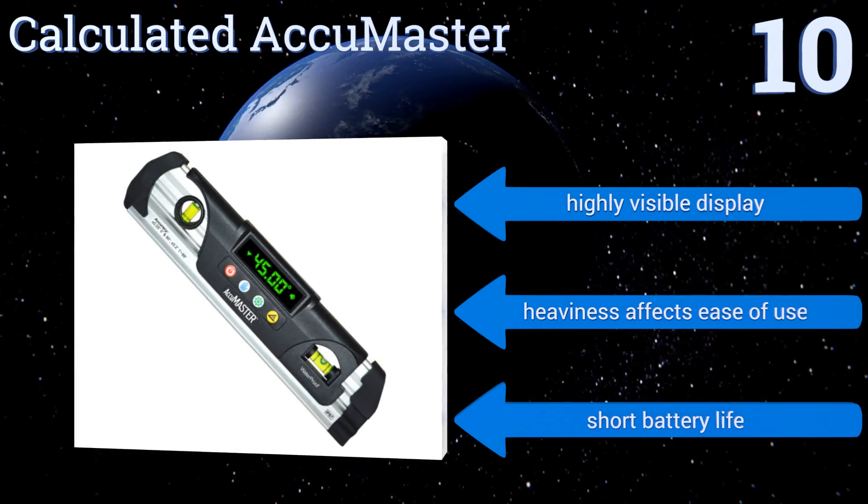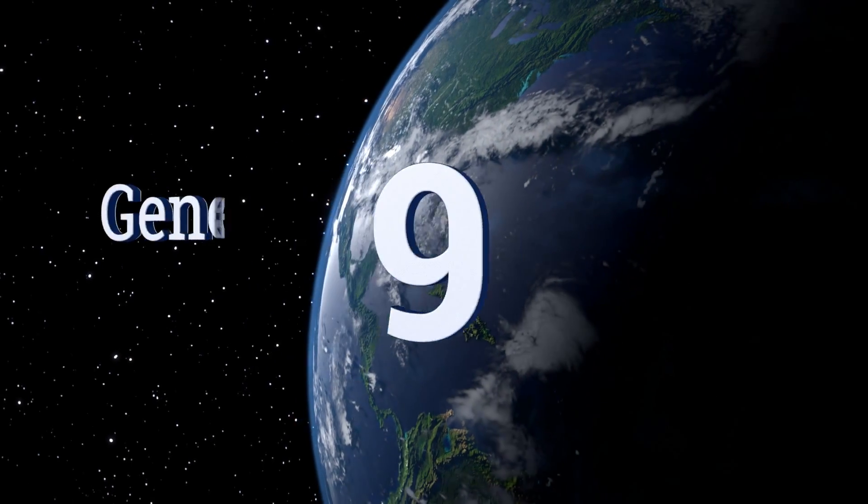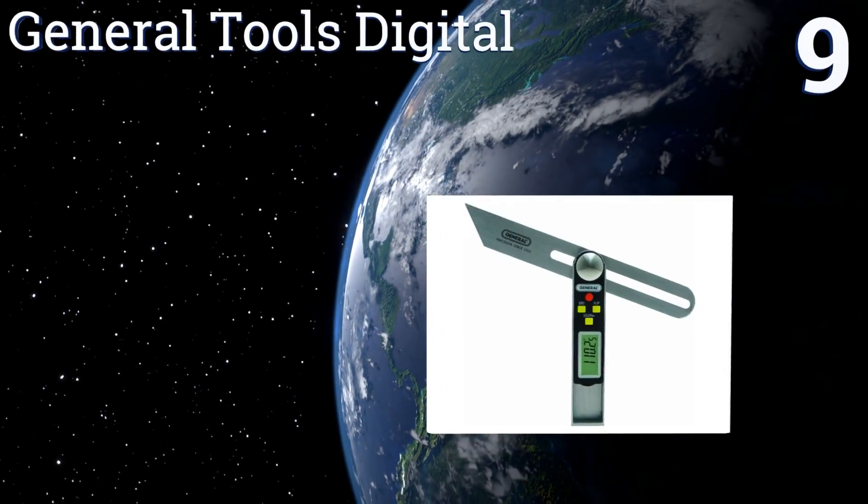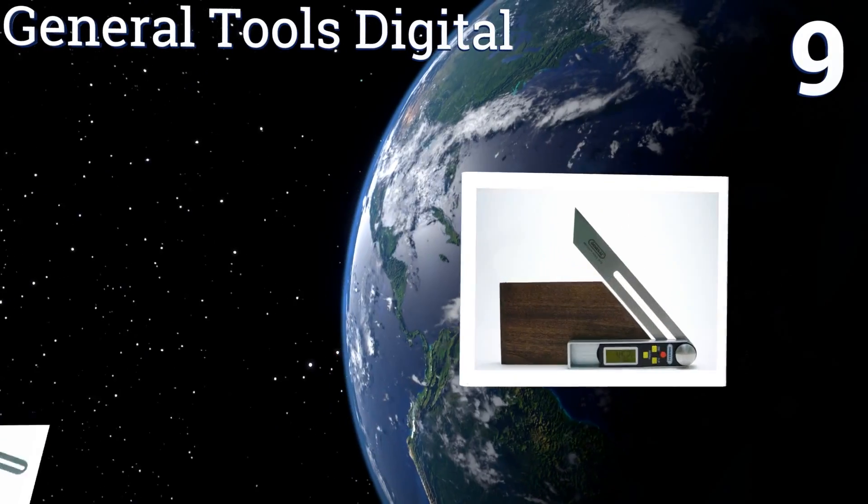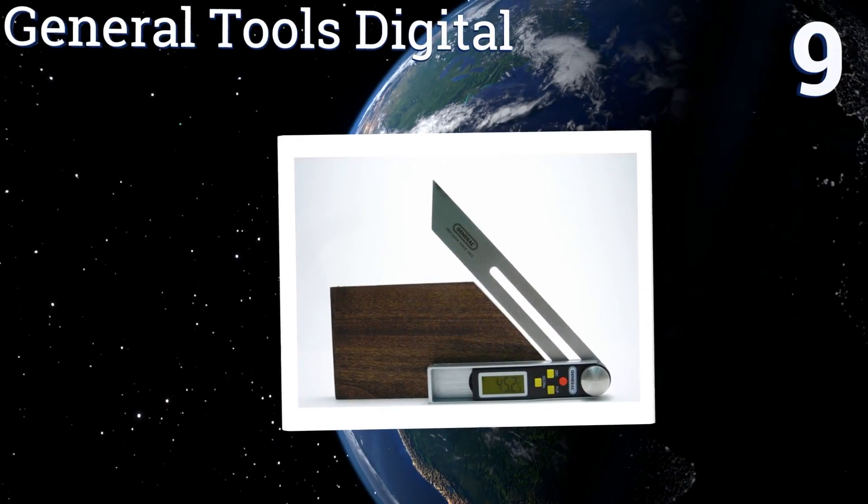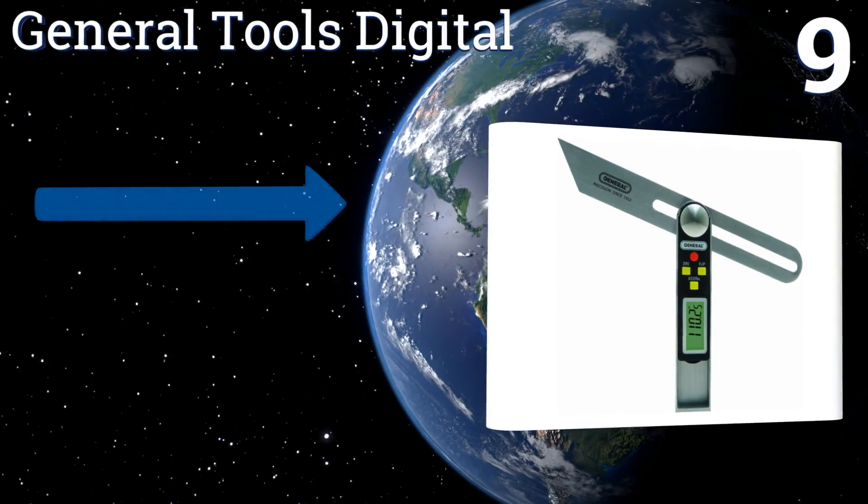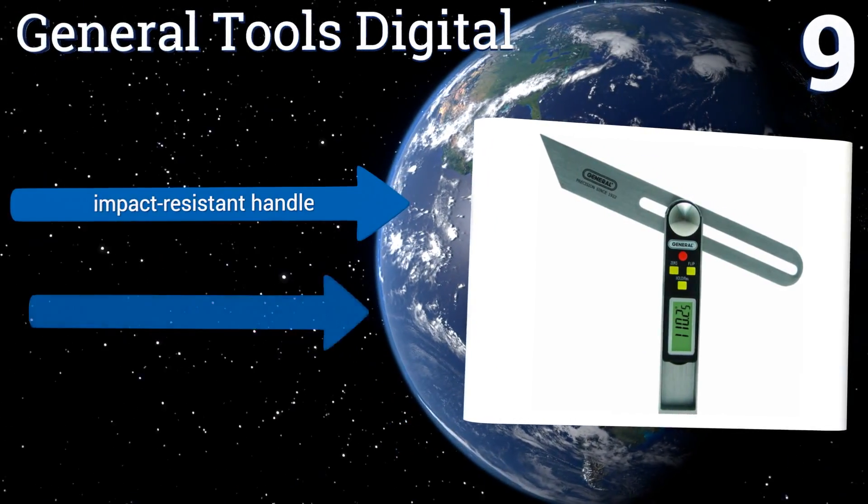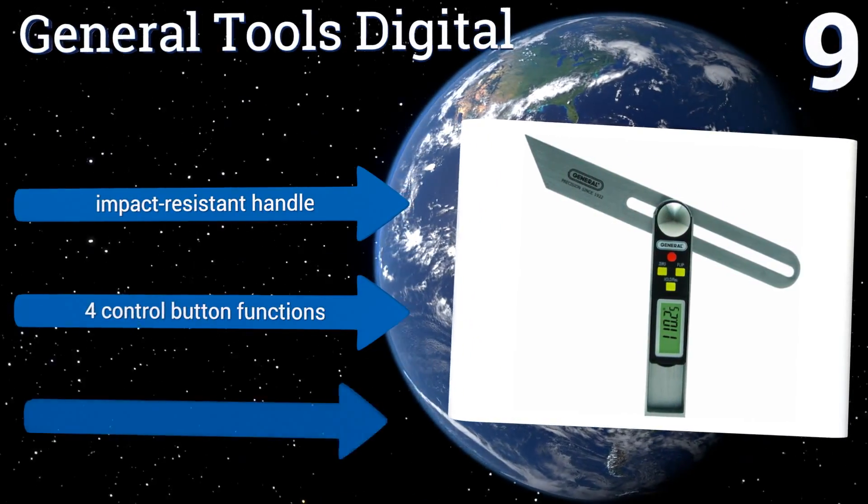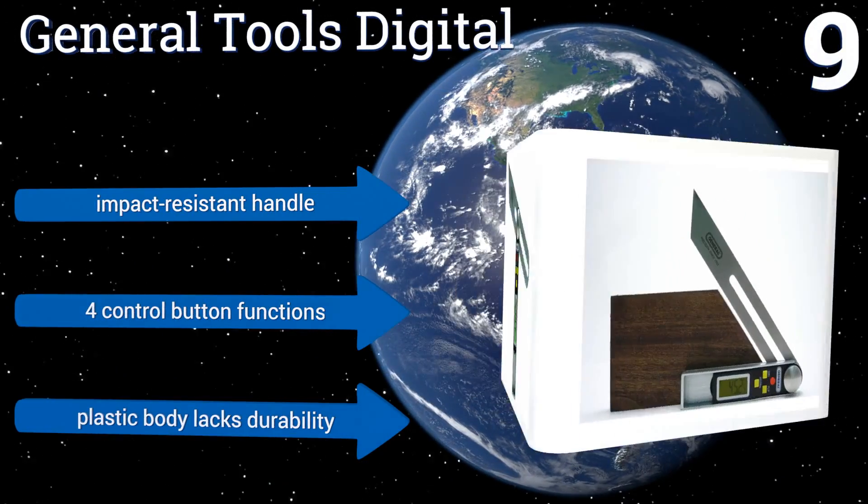At number nine, if you're looking for something that will measure with unbelievable accuracy, the General Tools Digital probably won't fit the bill. But as an affordable option with a compact stainless steel blade that doubles as a T-bevel, you should get serviceable results. It has an impact-resistant handle and four control button functions, but its plastic body lacks durability.